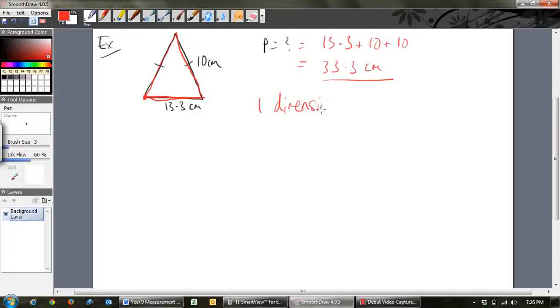So perimeter is a one dimensional unit, so centimeters is all you do there. Centimeters to the power of one, it's one dimensional. Area is two dimensional so it'd be squared. Volume is three dimensional so it'd be cubed. So just make note of that, it's just centimeters, it's a length.